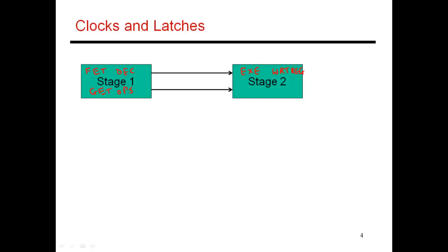Let's say instruction one is doing an add of R1 plus R2, writing the result to R3. In this example, R1 is the number five and R2 is the number seven. During the first cycle, in stage one, I fetch the instruction, figure out it's an add needing R1 and R2, and fetch those from the register file — those numbers being five and seven. At the end of the first cycle, five and seven show up on the outputs of stage one and are fed as inputs to stage two.